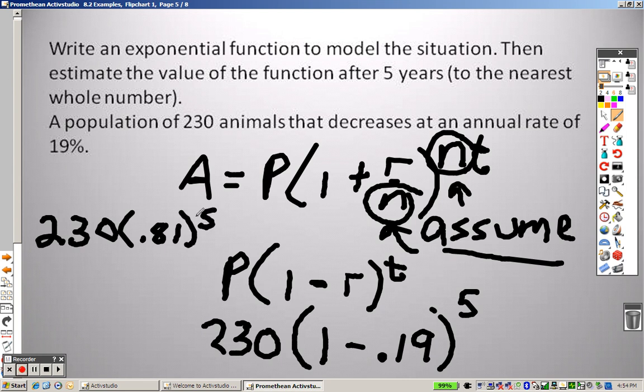So I plug that in my calculator, 230 times 0.81 to the fifth power. So I end up getting 80.2, and it says round to the nearest whole number, so it would just be 80 as your answer.